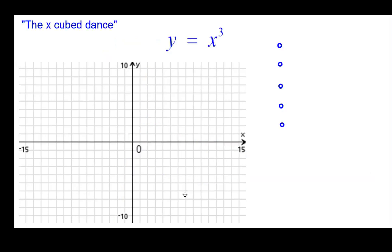So we're ready to do the x cubed dance. So we will start off with the point of inflection at the origin. And from there we'll go right 1 up 1 because 1 cubed is 1. Right 2 and up 8 because 2 cubed is 8.